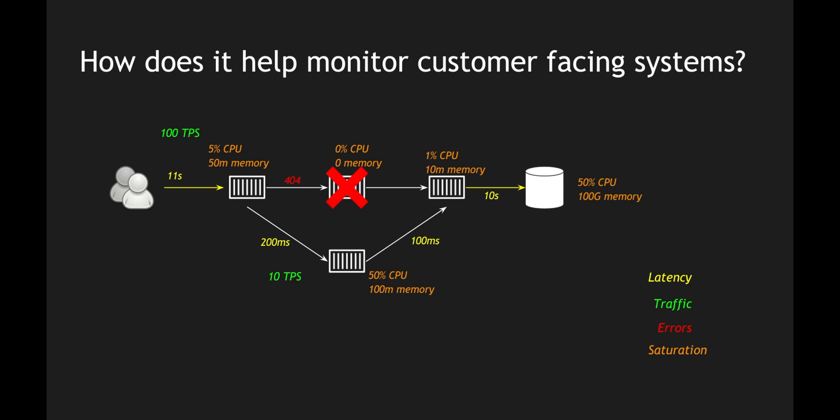The next metric is saturation, which signifies how much memory and CPU each application is using at a particular point in time. I can identify what's happening and what symptoms indicate a process could go down or be recovering. I can identify issues based on a threshold — for example, if CPU utilization exceeds 80%, I want an alert so I can spin up a new instance, or if memory is reaching a threshold I need to scale up and load balance. These are called golden signals and they primarily help us monitor our application and make it better for customers.